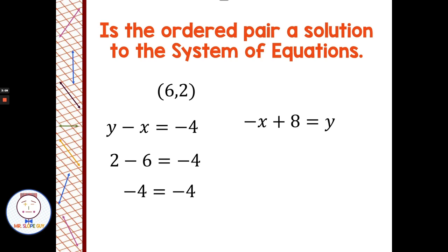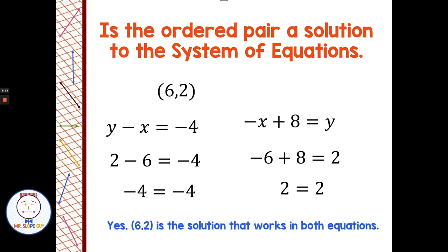Now let's check it in the second equation. Replace x with 6 and y with 2: we get −6 + 8 = 2. Negative six plus eight is two, so that works. The ordered pair worked in both equations. Since I get two true statements — negative four equals negative four, and two equals two — I know that (6, 2) is the solution. If we graph these two equations on a coordinate plane, they would cross at the point (6, 2).